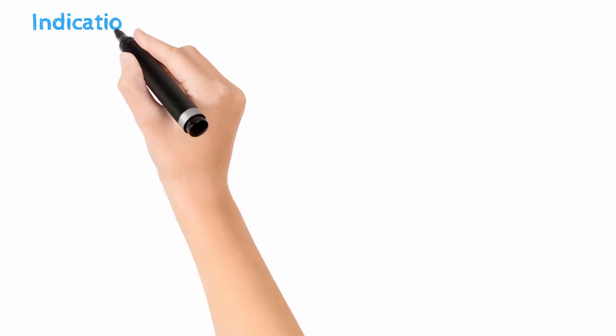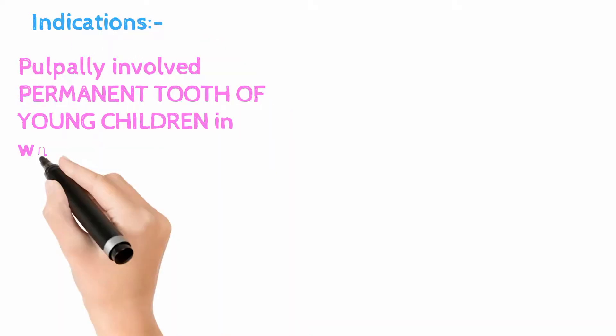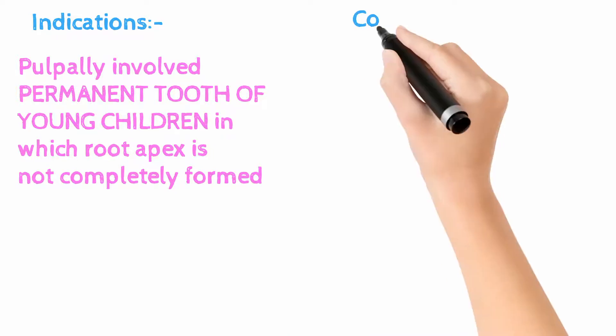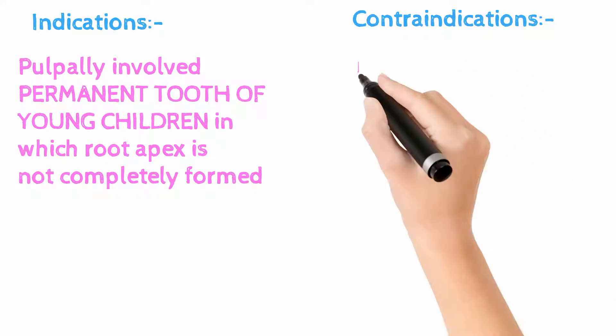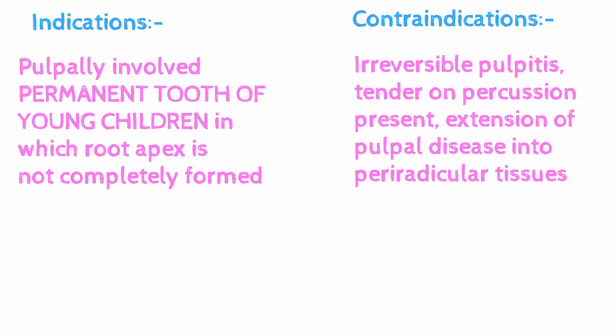Indications for pulpotomy are pulpally involved permanent teeth of children in which the root apex is not completely formed. Contraindications of pulpotomy are irreversible pulpitis, tenderness on percussion, and presence or extension of pulpal disease into periradicular tissues.